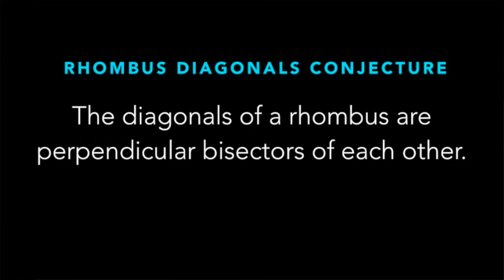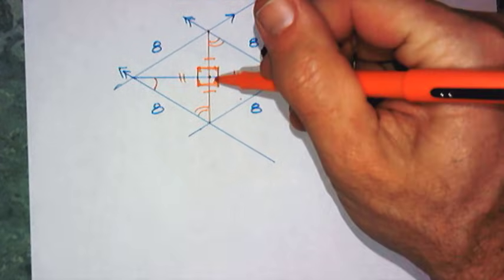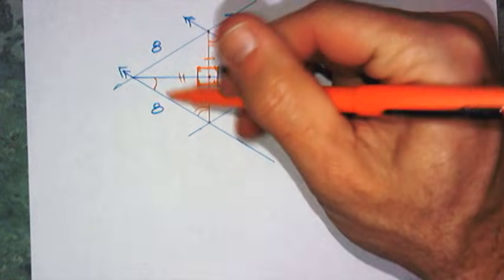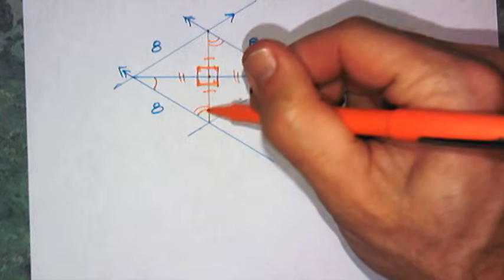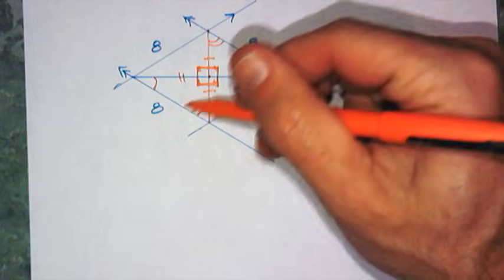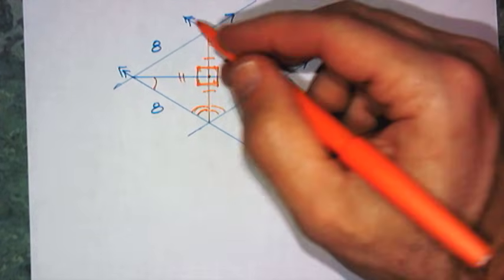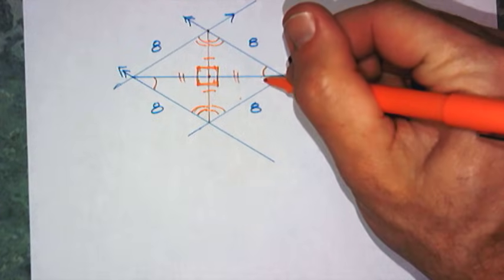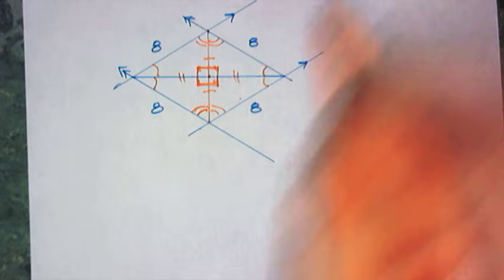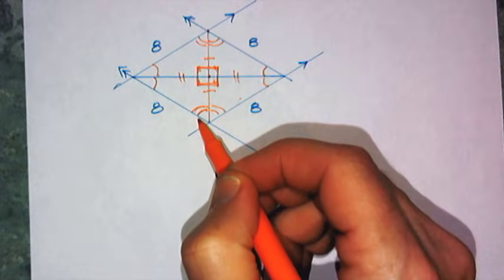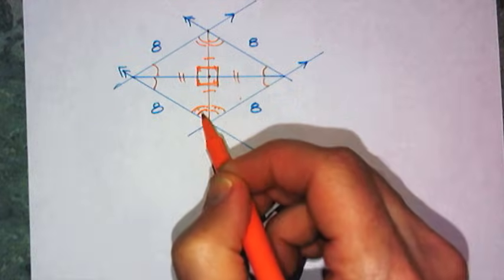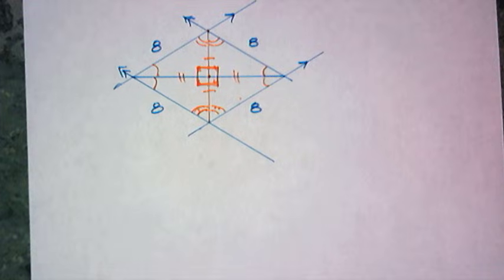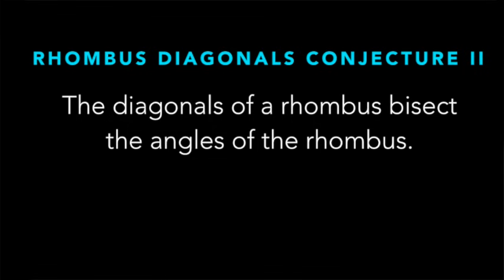Looking closely, since all four triangles are congruent, in between the eight and the one is a double-marked angle, and in between the eight and the two is a single-marked angle. What you notice is that on both sides those angles are congruent — the diagonal is bisecting the angles. So conjecture three, the rhombus diagonals conjecture two: the diagonals of a rhombus bisect the angles of the rhombus.